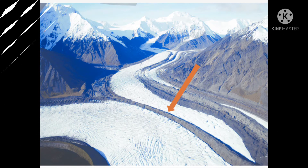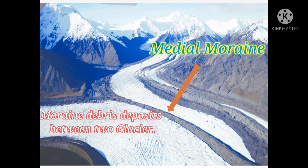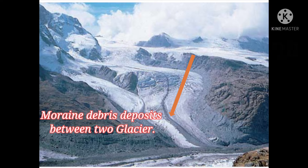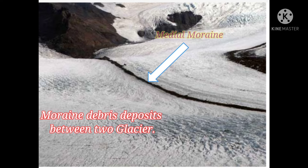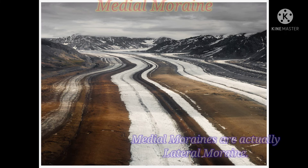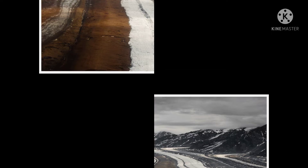Let's know about medial moraine. Medial moraines are nothing but a moraine which forms between two glaciers. When a tributary glacier meets with a main glacier, a moraine forms between them — this is called a medial moraine. Actually, when two glaciers meet, their lateral moraines merge together and form a medial moraine.